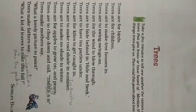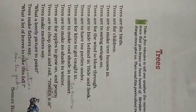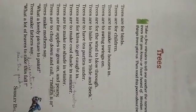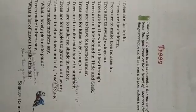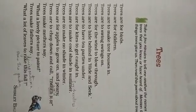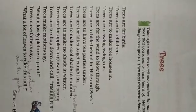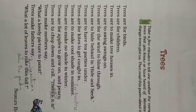Trees are for birds. Trees are for children. Trees are to make tree houses in. Trees are to swing, swing, swing. So trees belong to birds — birds get food and they have their homes, they lay their eggs. Trees are for children also — children play there and enjoy there, and children make tree houses in them.